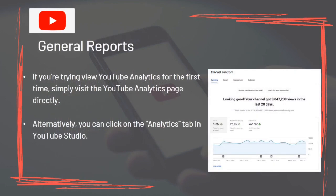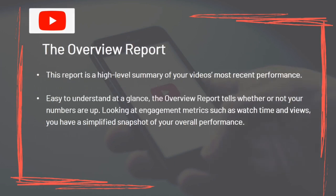If you're trying to view YouTube analytics for the first time, simply visit the YouTube analytics page directly. Alternatively, you can click on the analytics tab in YouTube Studio. The Overview Report is a high-level summary of your video's most recent performance. Easy to understand at a glance, it tells whether your numbers are up, looking at engagement metrics such as watch time and views — a simplified snapshot of your overall performance.